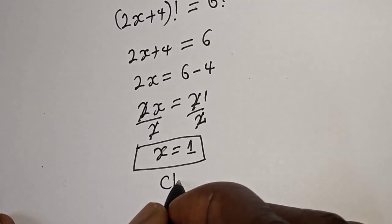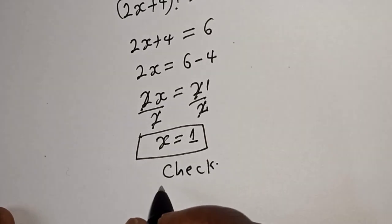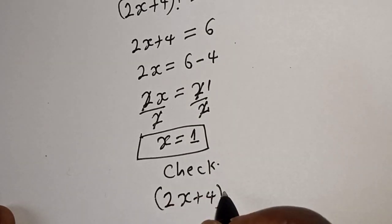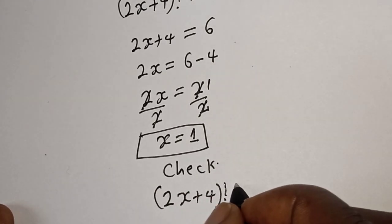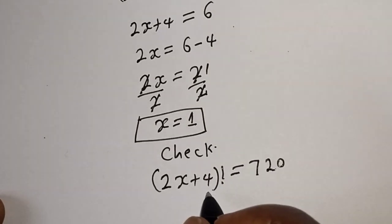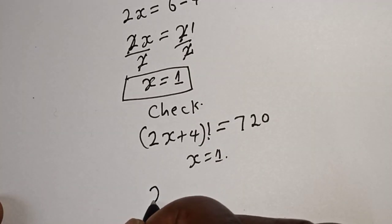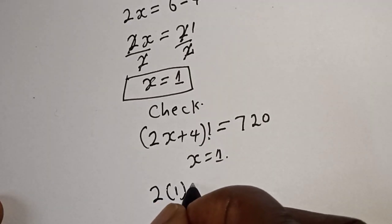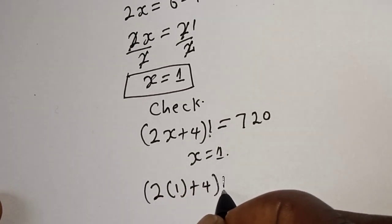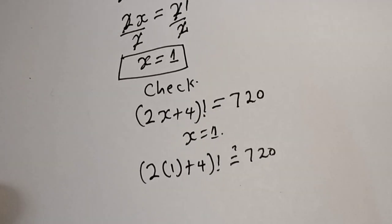And that is our final answer. We can check to confirm if our answer is right or wrong. Let's check. We have the given equation 2x plus 4 factorial is equal to 720. Then x equal to 1, this is 2 bracket 1 plus 4 factorial must be equal to 720.